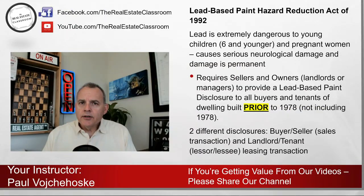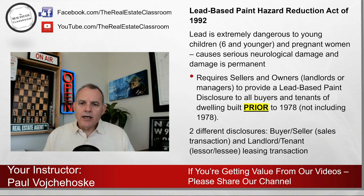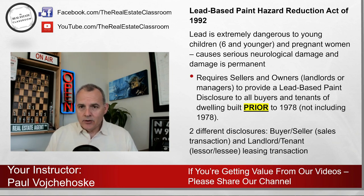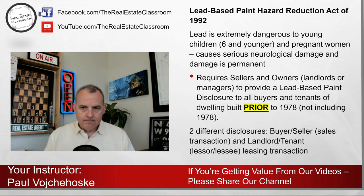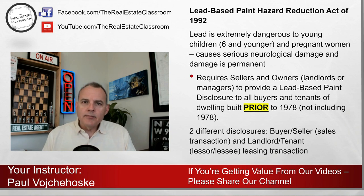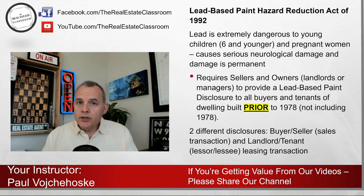The law requires buyers, sellers, landlords, and tenants to do certain things. It requires sellers and owners — meaning landlords or property managers authorized to represent the owners — to provide a lead-based paint disclosure to all buyers and tenants of dwellings built prior to 1978. Not including 1978, even though the federal government allowed manufacturers of lead-related materials to sell their product up through July 1st, 1978.